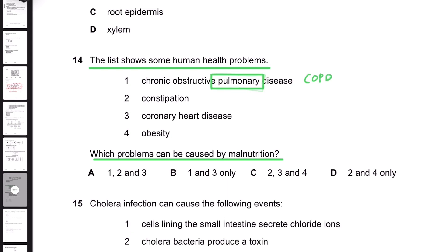The word 'pulmonary' means it's related to the lungs. Number one is not caused by malnutrition because it's actually caused by many pollutants, like the smoke that comes from cars, trucks, vehicles, and factories. They are the main problems.